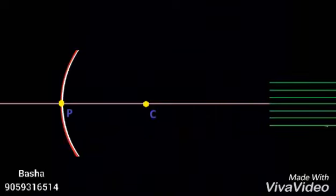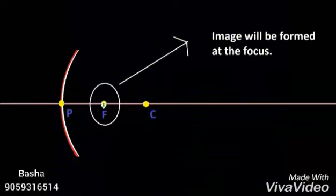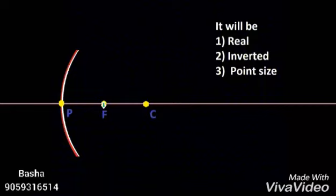Now let us see the ray diagrams. Case 1: When the object is at infinity, the rays coming from the object will be parallel. The set of parallel rays, also parallel to the principal axis, converges to a point called the focus, and the image will be formed at the focus. It will be a real, inverted, and point-size image.